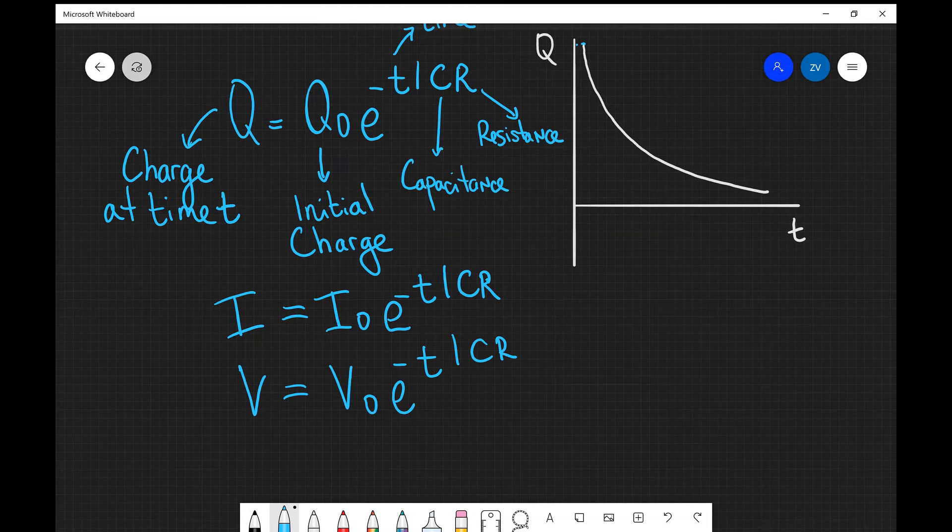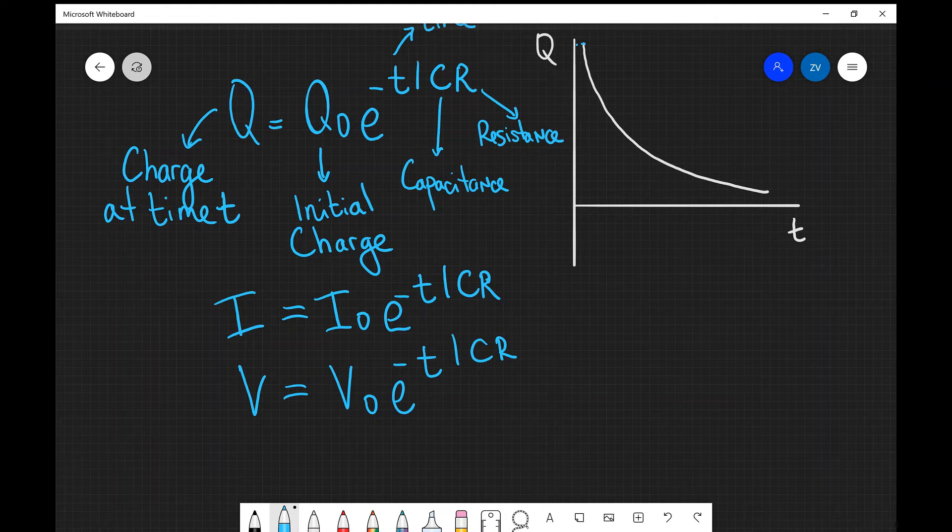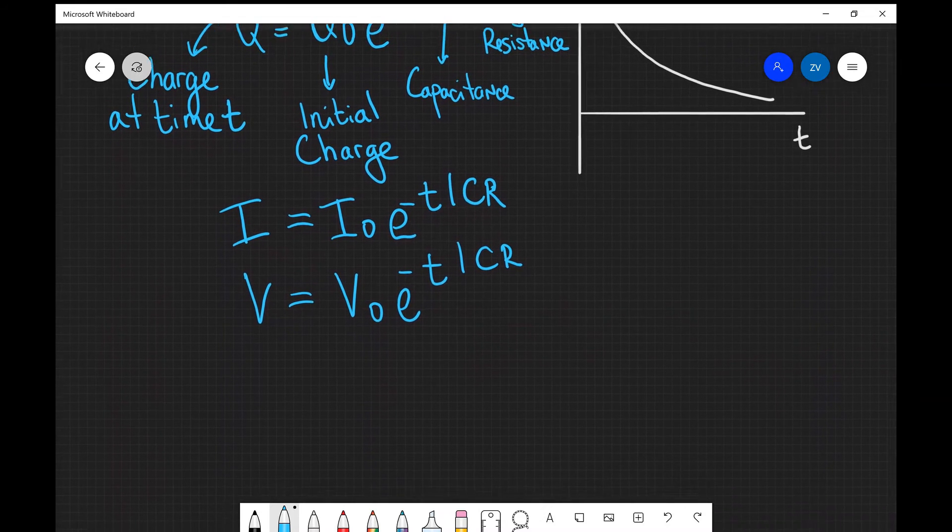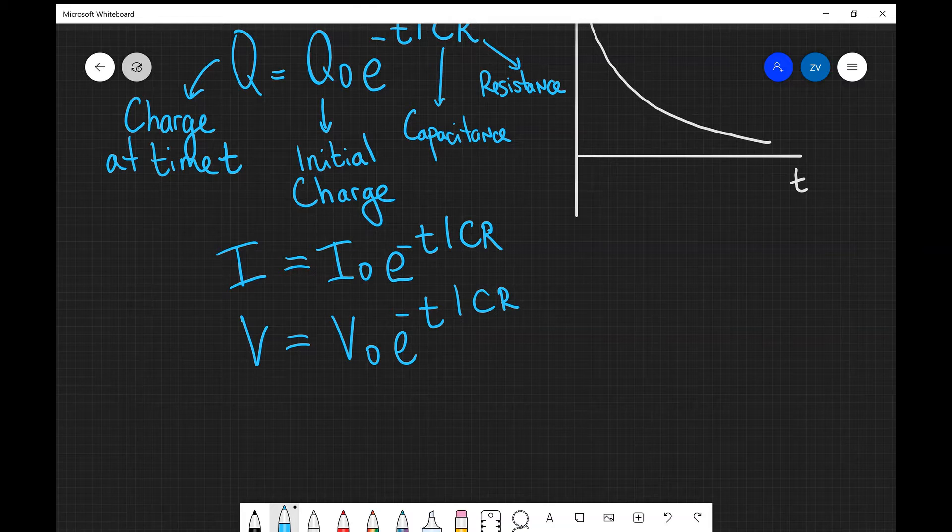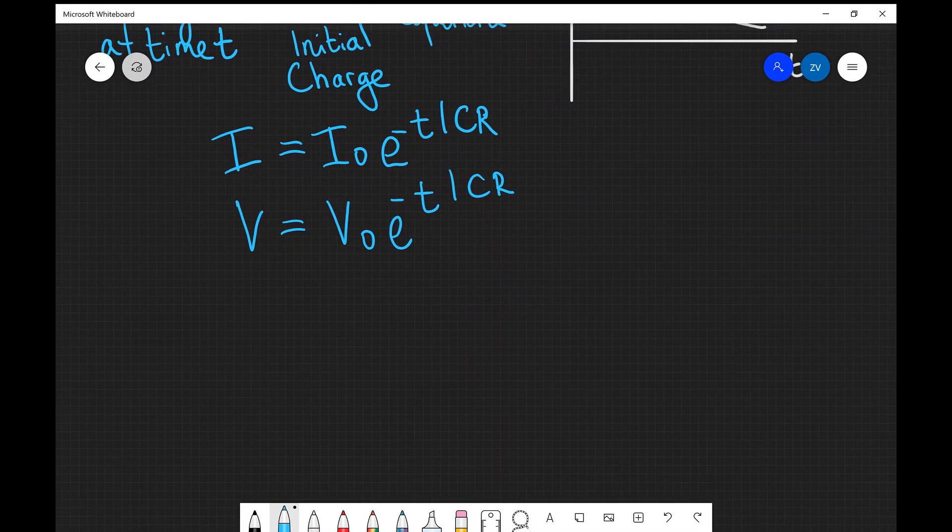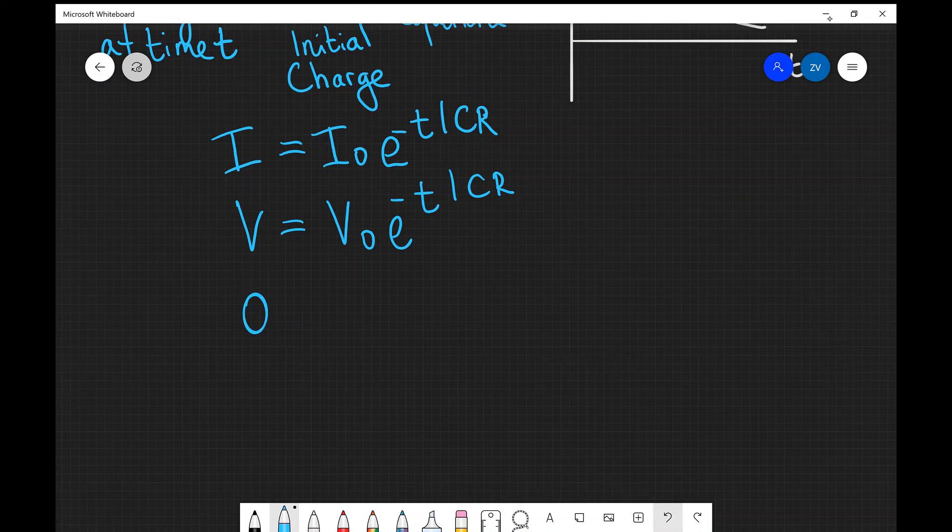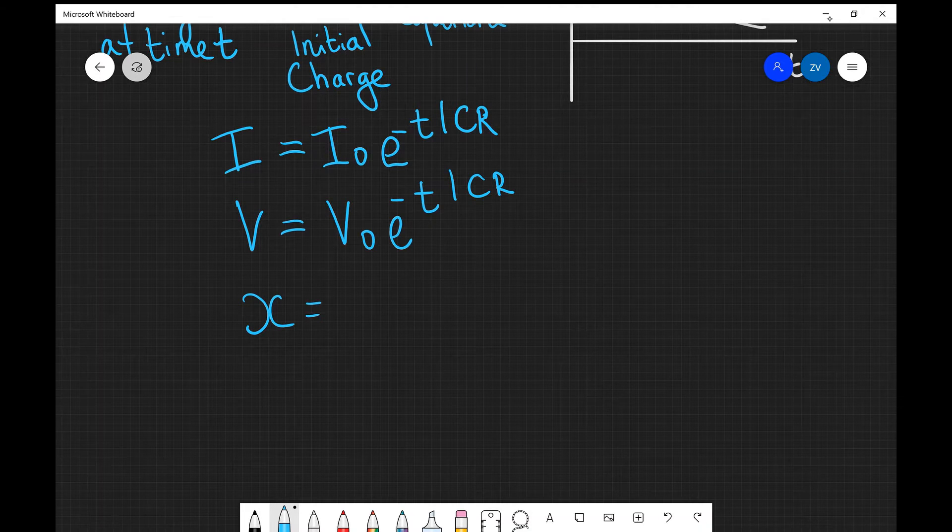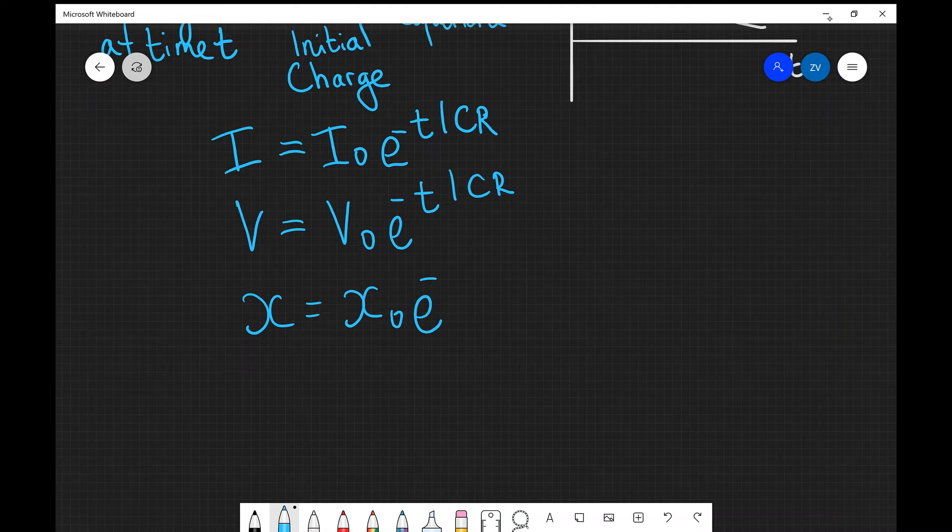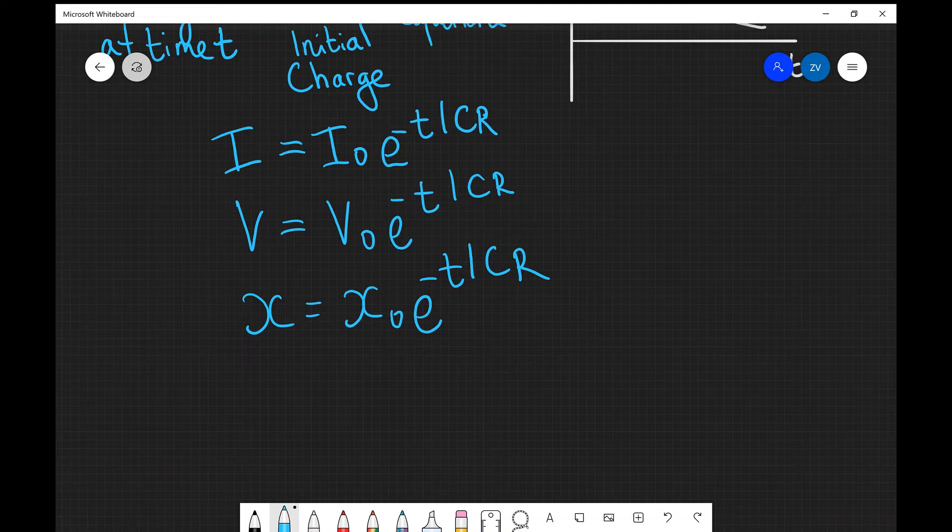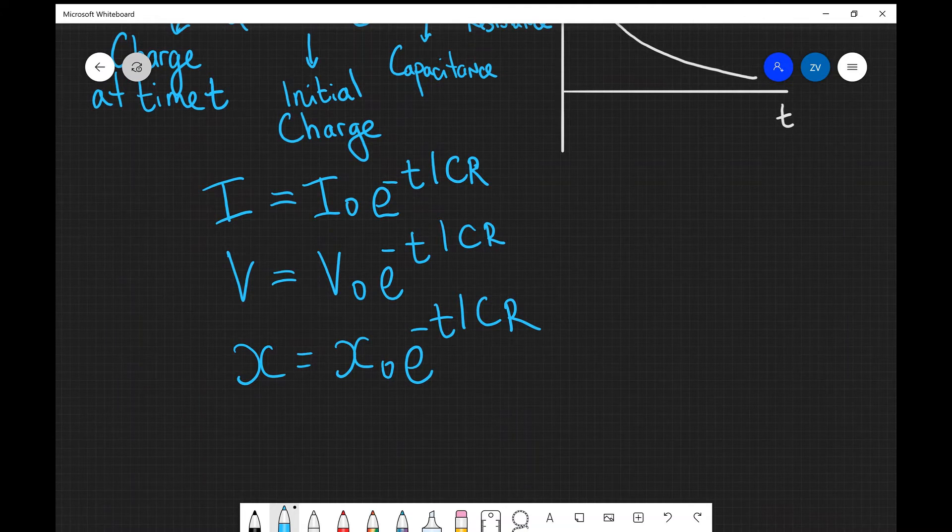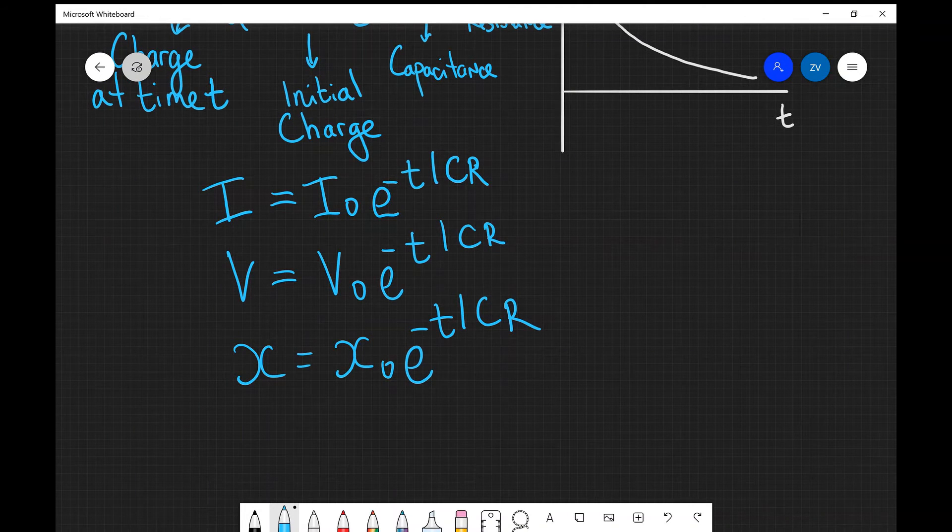So the equation that we're actually given for the exam in the formula sheet is actually just a general equation. Rather than giving us three different sets of exponential decay equations, what they're giving us is X = X₀e^(-T/CR). All we need to do is just see which one of those quantities is best to use in a question.